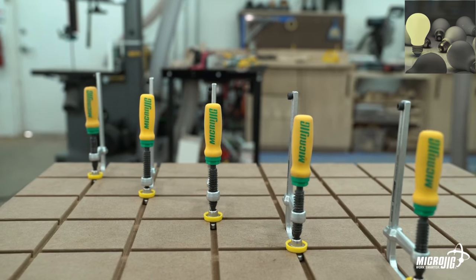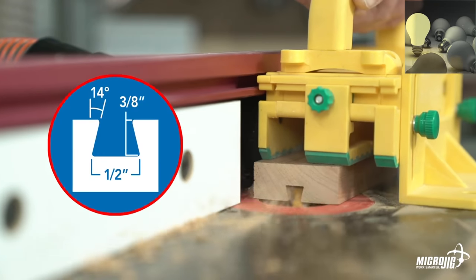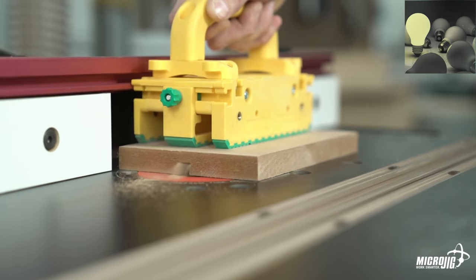Matchfit dovetail clamps are unlike any other track clamp. Its head is forged into a 14 degree half-inch dovetail profile allowing you to create your own tracks with one of the most common router bits on the market.